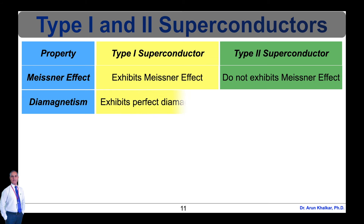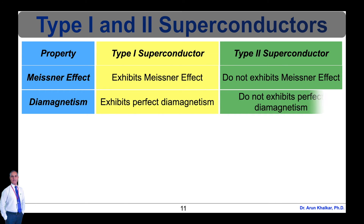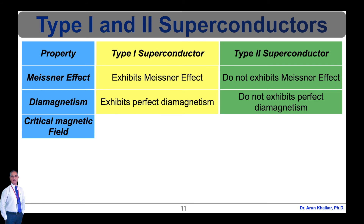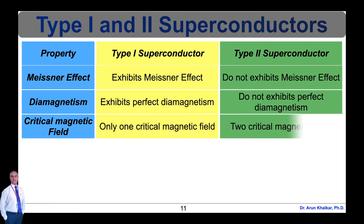Second property: diamagnetic behavior. In type 1, they show perfect diamagnetic behavior, while in type 2, they do not show perfect diamagnetic behavior. Third property: critical magnetic field. In type 1, they have only one critical magnetic field HC, whereas in type 2, they have two critical magnetic fields — at lower critical magnetic field HC1, flux starts penetrating the superconductor, and at upper critical magnetic field HC2, flux enters the superconductor and it loses superconductivity.